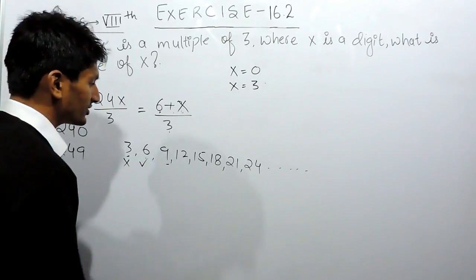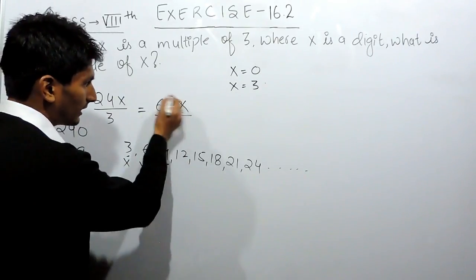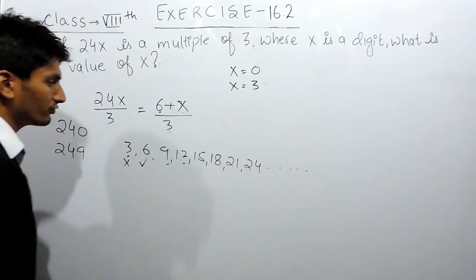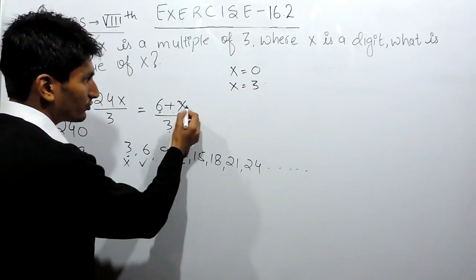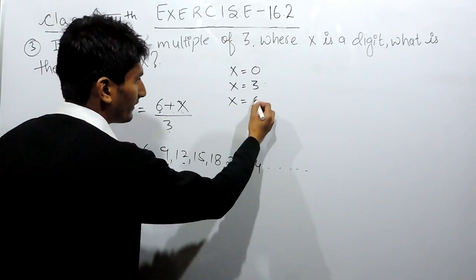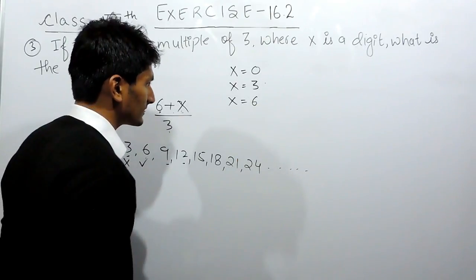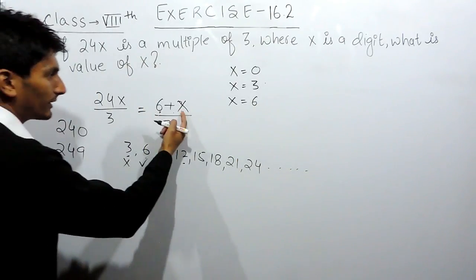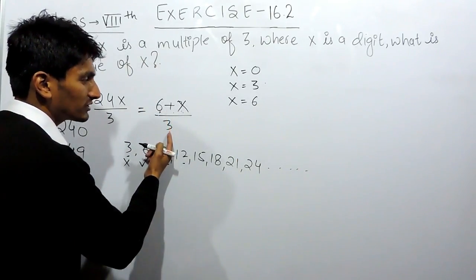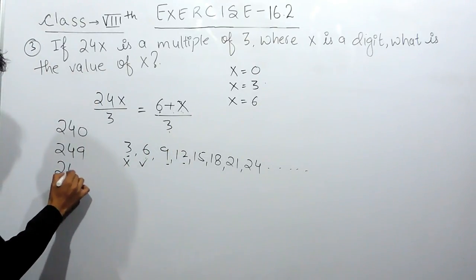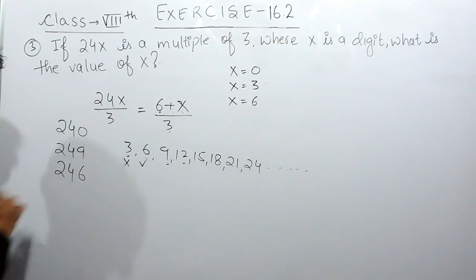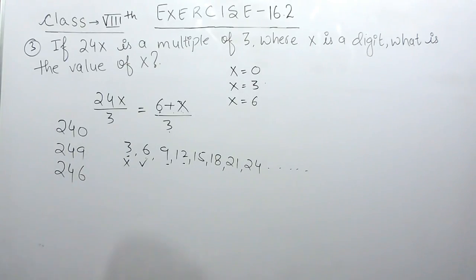Now let's check whether the sum equals 12. To make the sum 12, if I substitute x equals 6, this becomes 6 plus 6, which is 12, and 12 is divisible by 3. So the next number will be 246.